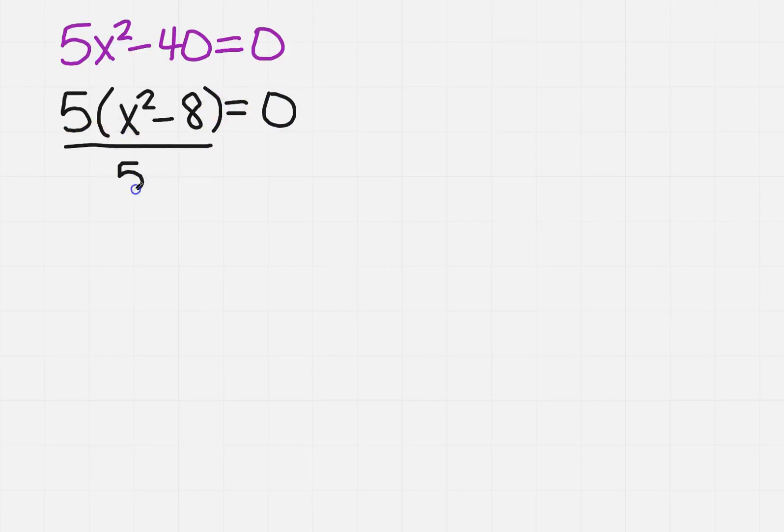I want to isolate the term with the x, so I'm going to divide both sides by 5. I'm going to get x squared minus 8 equals 0.